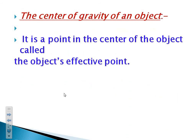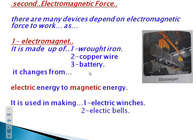Very important rule and very important definition: any object has a point in its center. This point is the most effective one due to the gravitational force of the earth. This point is called the center of gravity of an object. The center of gravity is a point in the center of the object, which is called the object's effective point. Now I have finished talking about the first type of forces, which is the attraction force.